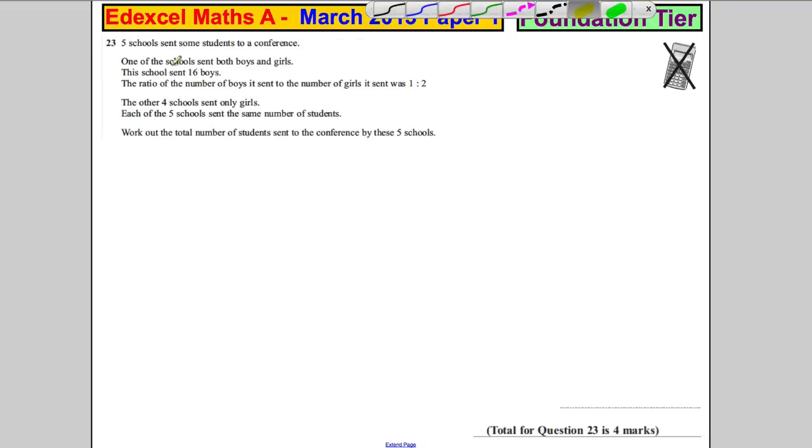So let's highlight some of this. Five schools we've got. One of the schools sent boys and girls and this sent 16 boys. The ratio of boys to girls was 1 to 2. The four other schools only sent girls. Each of the five schools sent the same number of students. Work out the total number of students.